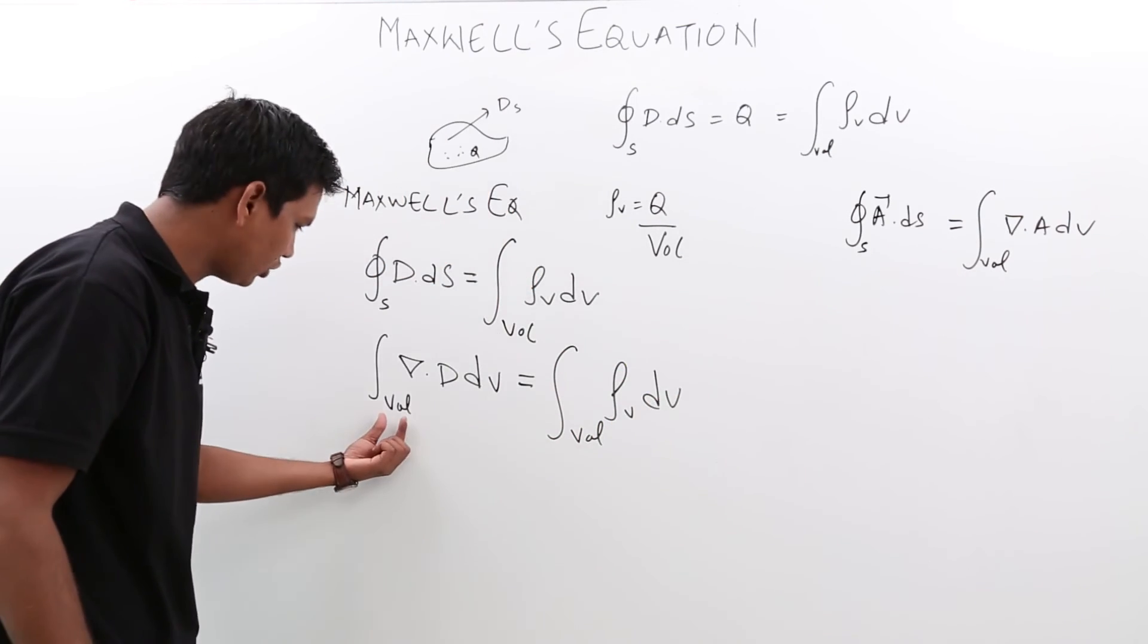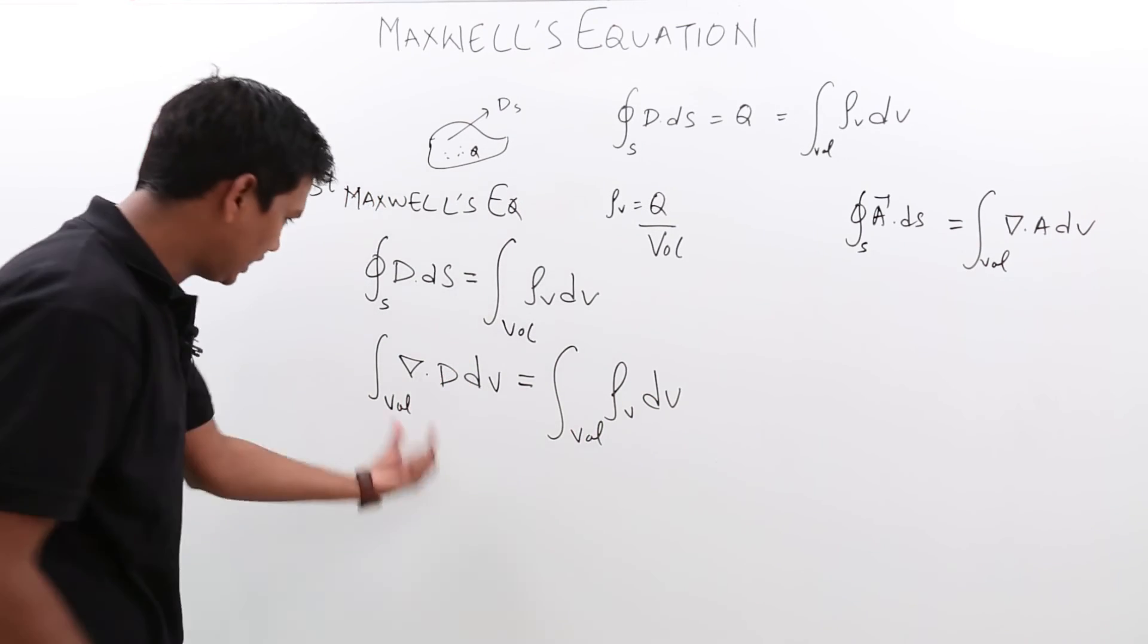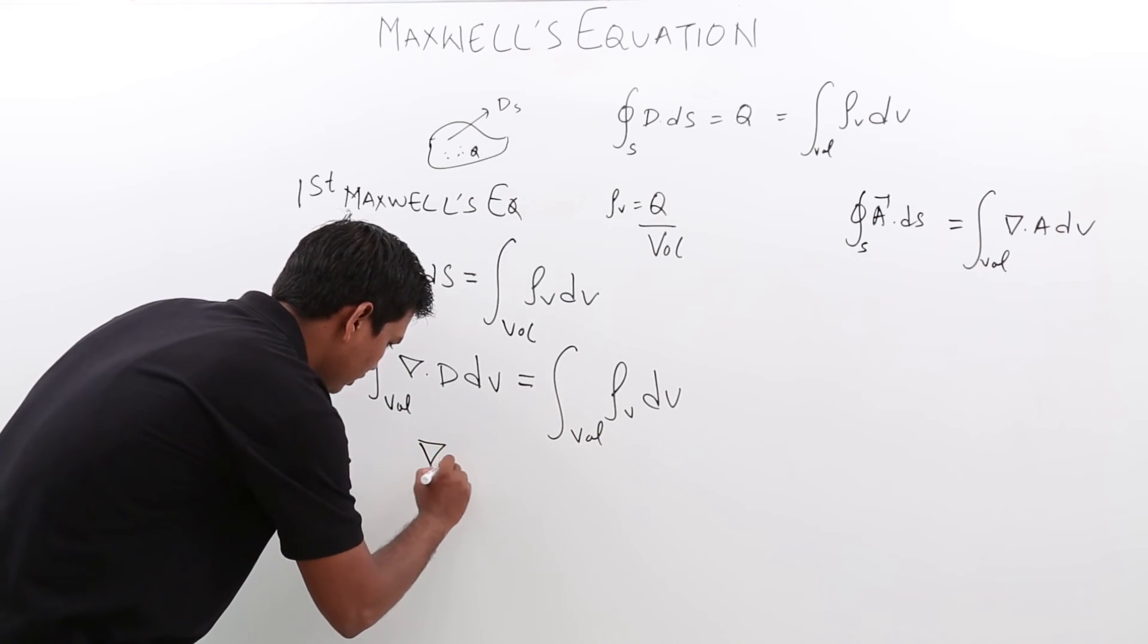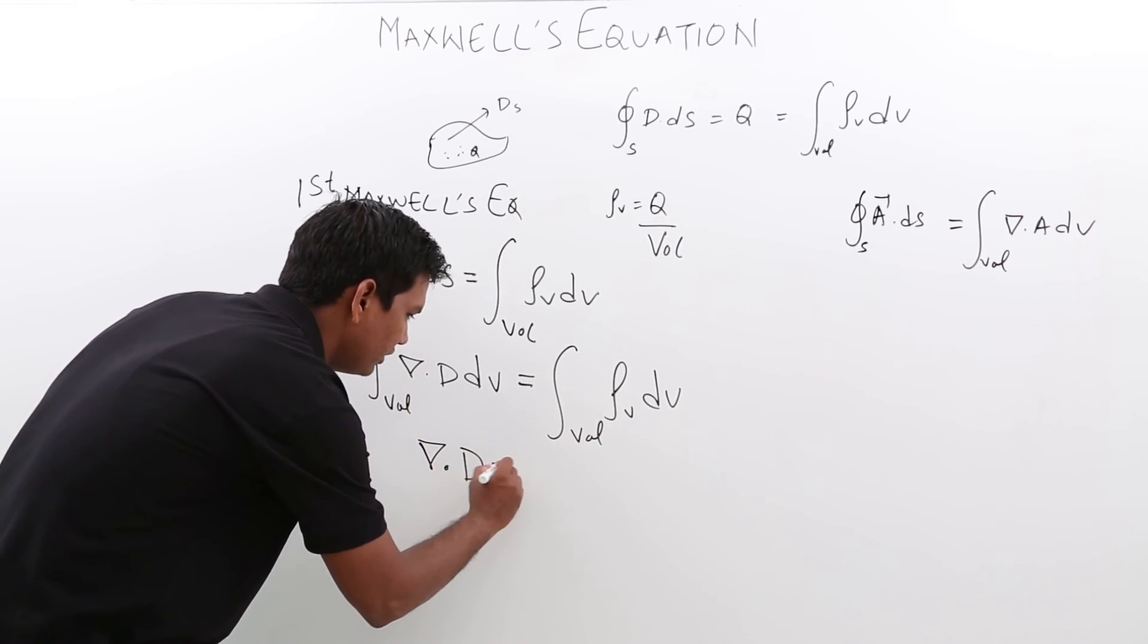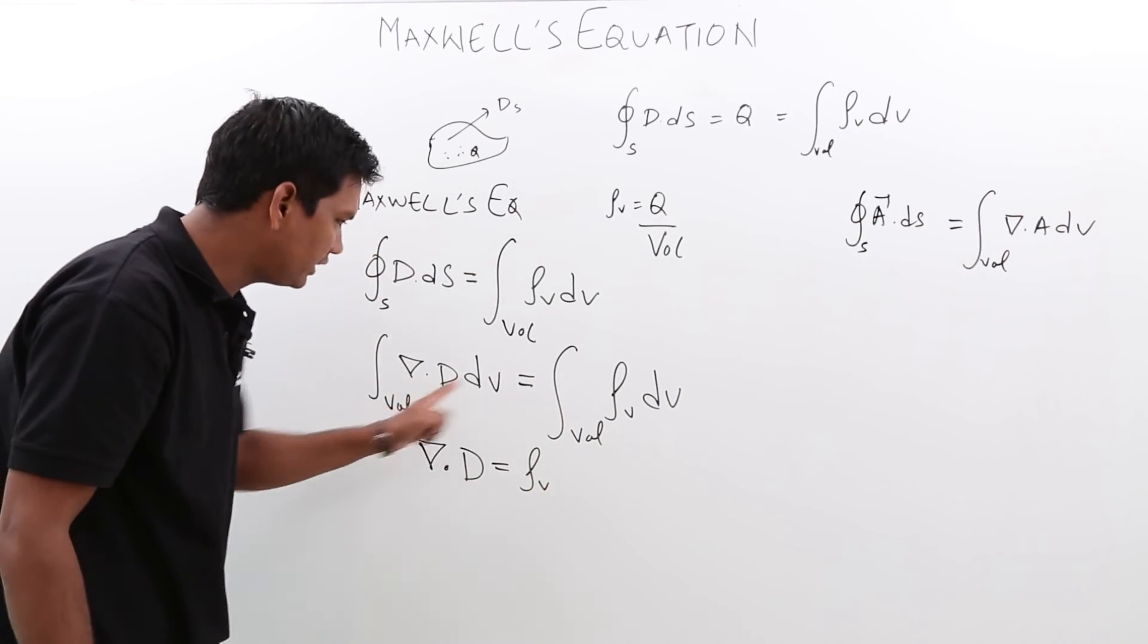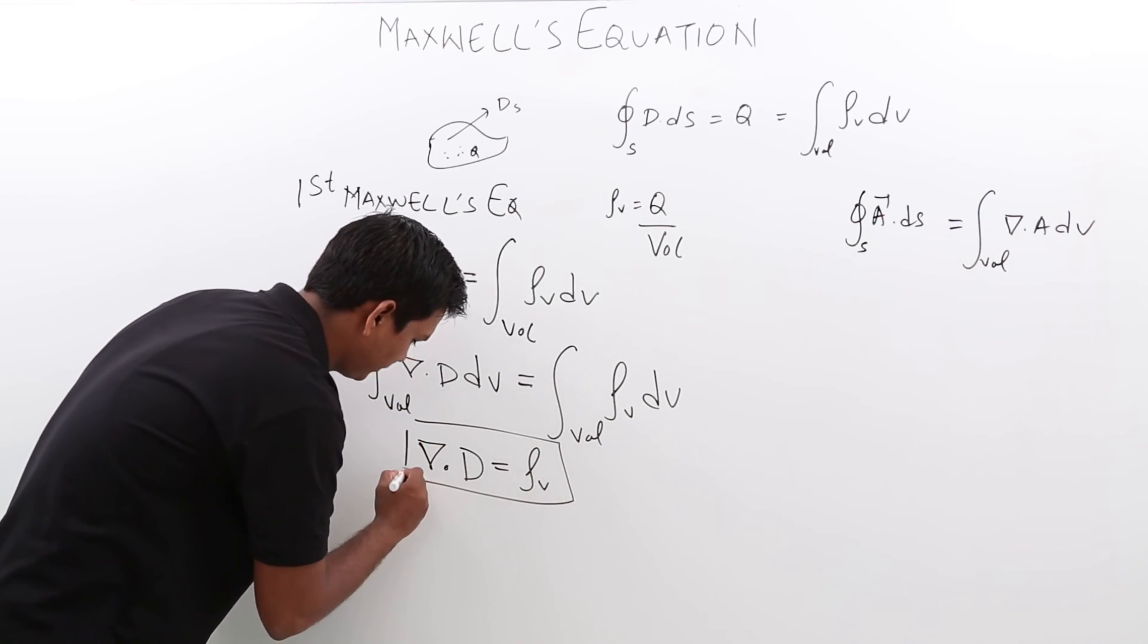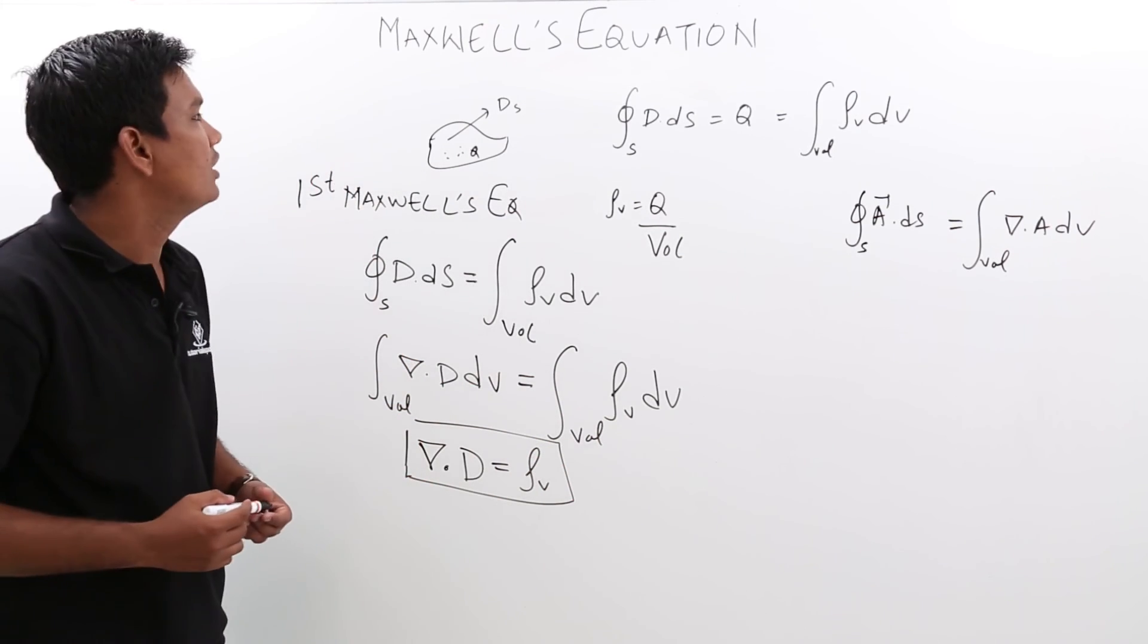Now, this is also over the volume integral, and this is also over the volume integral. I can equate them. So, I conclude that del dot D equals rho_v, because if both integrals are equal, then del dot D must equal rho_v. This is called the point form of Maxwell's equation.